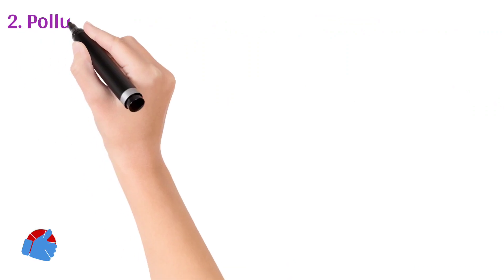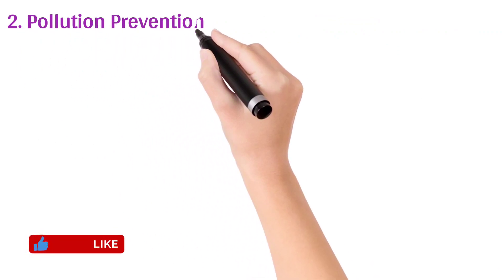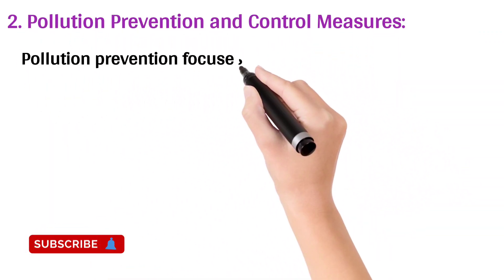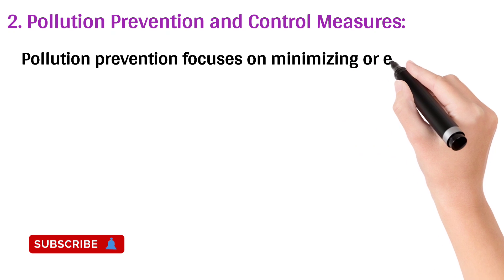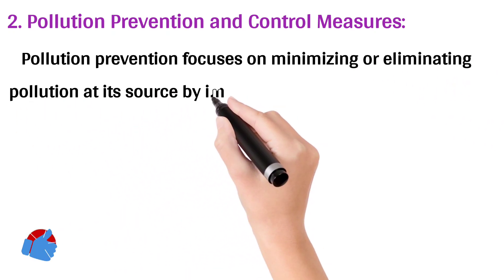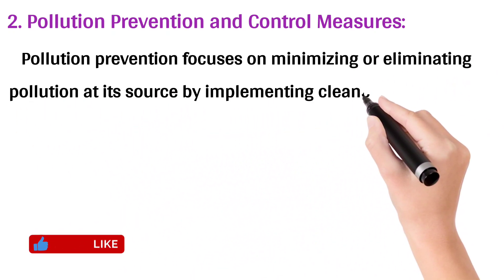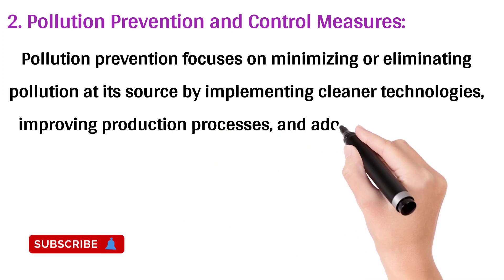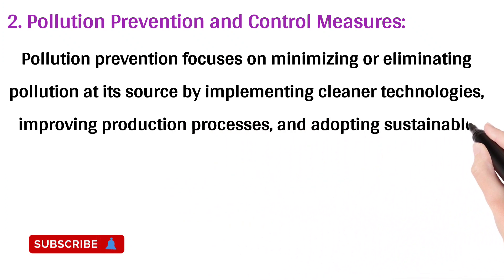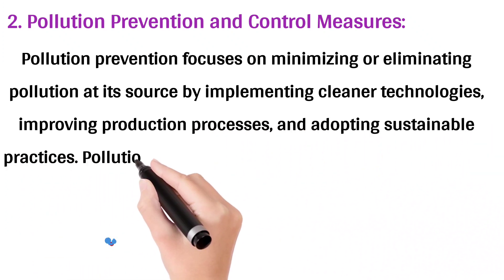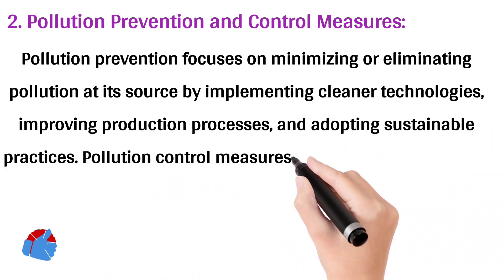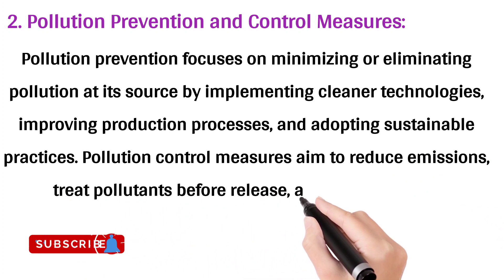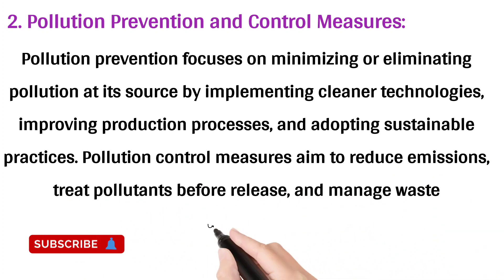2. Pollution Prevention and Control Measures: Pollution prevention focuses on minimizing or eliminating pollution at its source by implementing cleaner technologies, improving production processes, and adopting sustainable practices. Pollution control measures aim to reduce emissions, treat pollutants before release, and manage waste effectively.